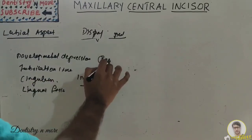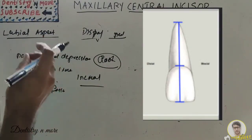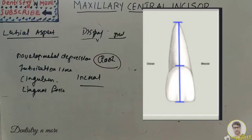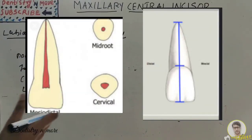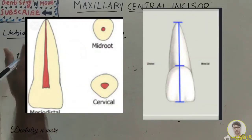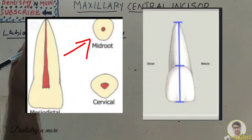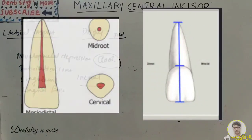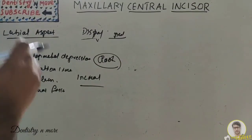The root is single, conical, relatively straight, and tapers to a rounded apex. A horizontal cross section near the cervical line shows a rounded triangular outline — wider labially (base of triangle) and narrower lingually (apex). The mid-root cross section reveals a wider outline that is labiolingually wider than mesiodistally.